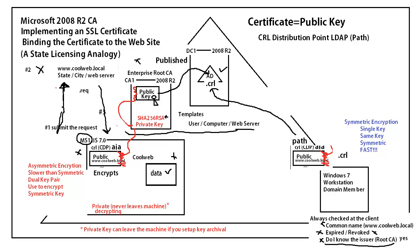The last thing we check before we actually connect to the website is really, really important: has the certificate been revoked? What we're going to do is go to the Active Directory LDAP path — we're assuming this is all internal Active Directory based — and we're going to download this revocation list. This list is a list of all the revoked certificates. If this private key had gotten compromised for whatever reason, we could revoke this certificate, and that revocation would occur here at the issuer.